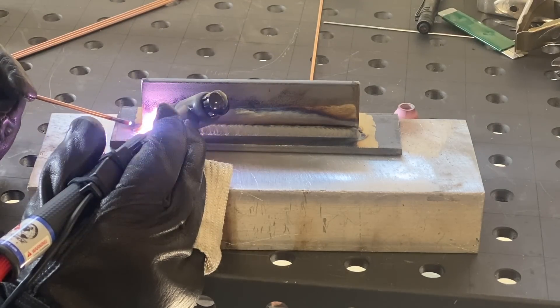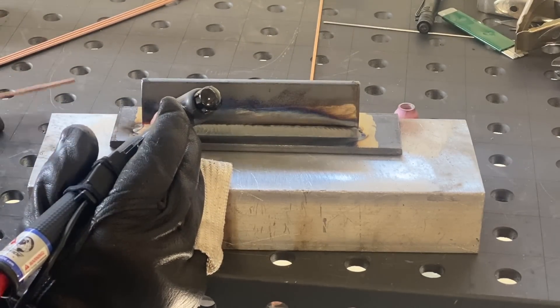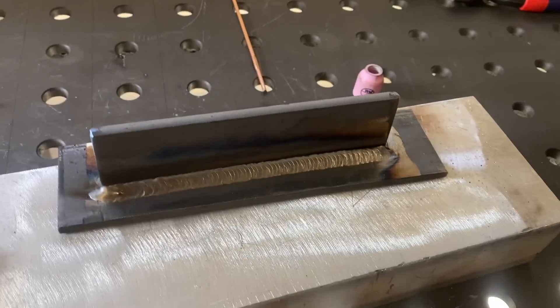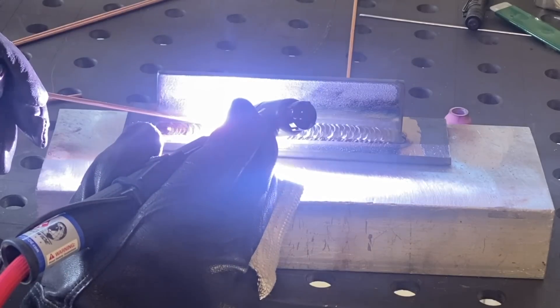With the 4T setting set here and a down slope I just need to anticipate like two seconds before I get to the end and then let off the trigger and I get just a little bit of tapering off and that's really all you need on something like this. I'm wire brushing every pass so that that next pass won't have any surface oxidation to deal with.